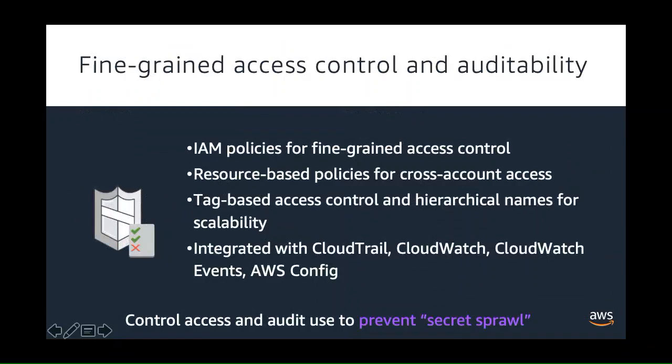Another key aspect is access control. Secret sprawl comes with different kinds of problems — the key ones are lack of visibility and lack of control. Customers use IAM policies to secure access to their secrets. For example, specific IAM roles can have read access, but only admin roles can have create or delete access. We also support resource-based policies, where the resource is the secret. The advantage here is that resource-based policies enable customers to grant access to principals from different accounts.